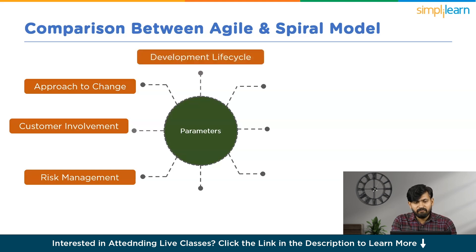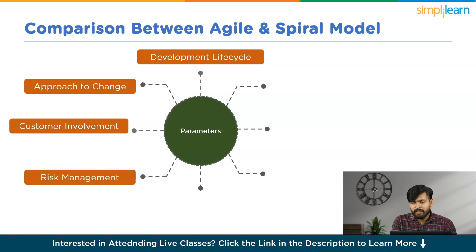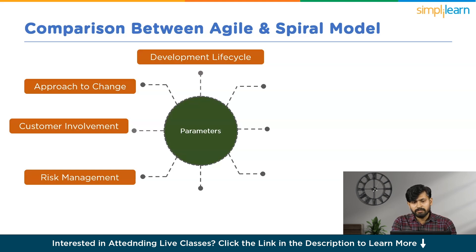The next parameter is the Development Lifecycle. The Agile model is characterized by short, time-boxed iterations or sprints, each involving planning, execution, testing and delivery of a specific set of features. The development cycle is continuous and iterative, with the product evolving incrementally in response to feedback. This lifecycle suits projects where requirements may change frequently and delivering a minimum viable product quickly is essential. The Spiral model's development lifecycle consists of multiple iterations or spirals, each encompassing planning, risk analysis, engineering, testing and evaluation. The project begins with identification of objectives and alternatives, followed by development of a prototype. Subsequent spirals build upon previous ones, incorporating feedback and addressing risk — particularly effective for large, complex projects where systematic risk analysis is crucial.